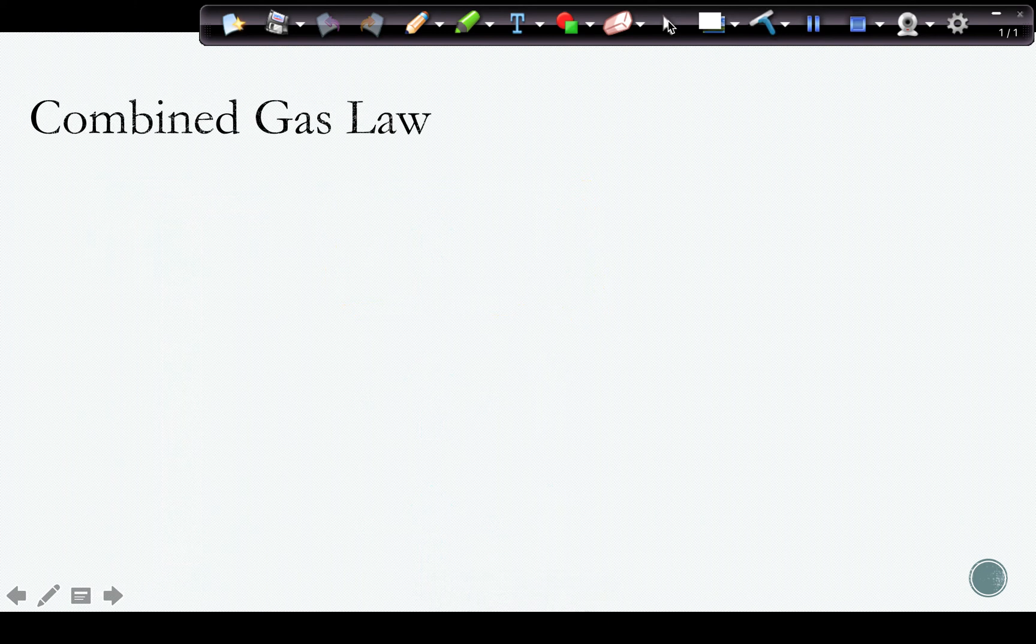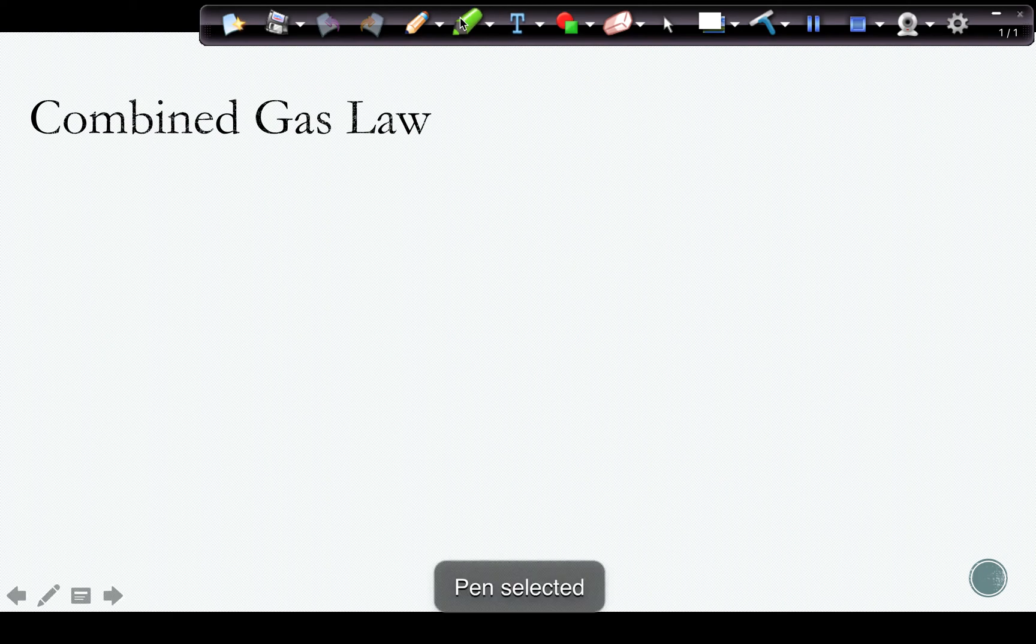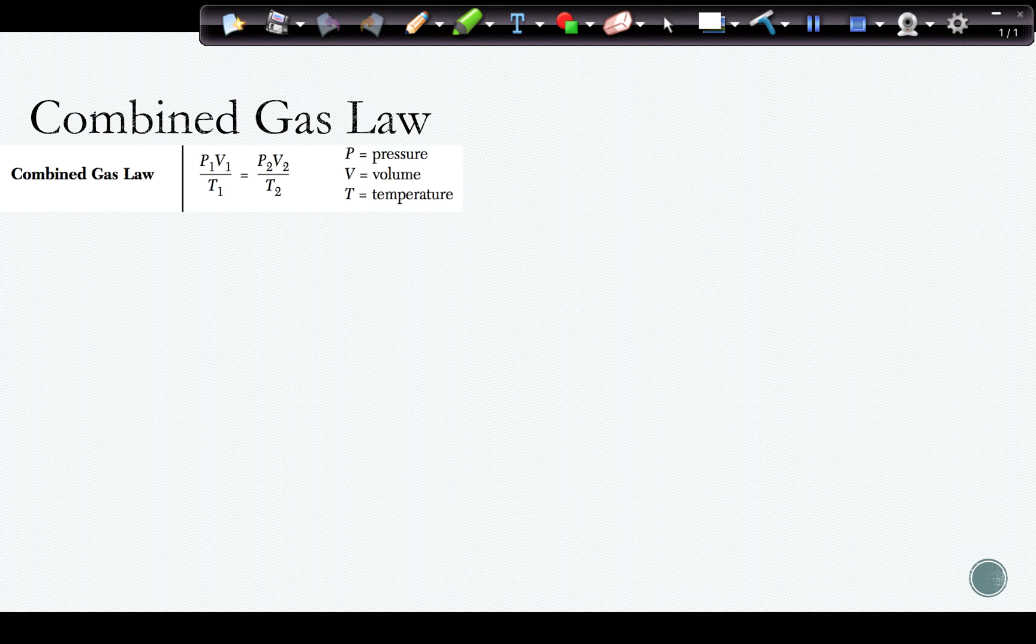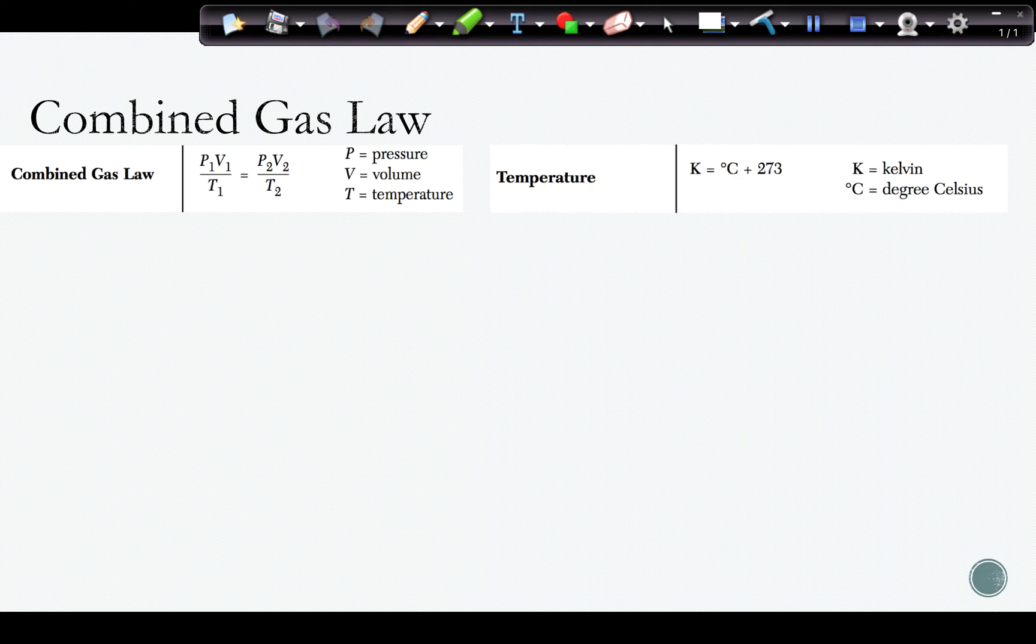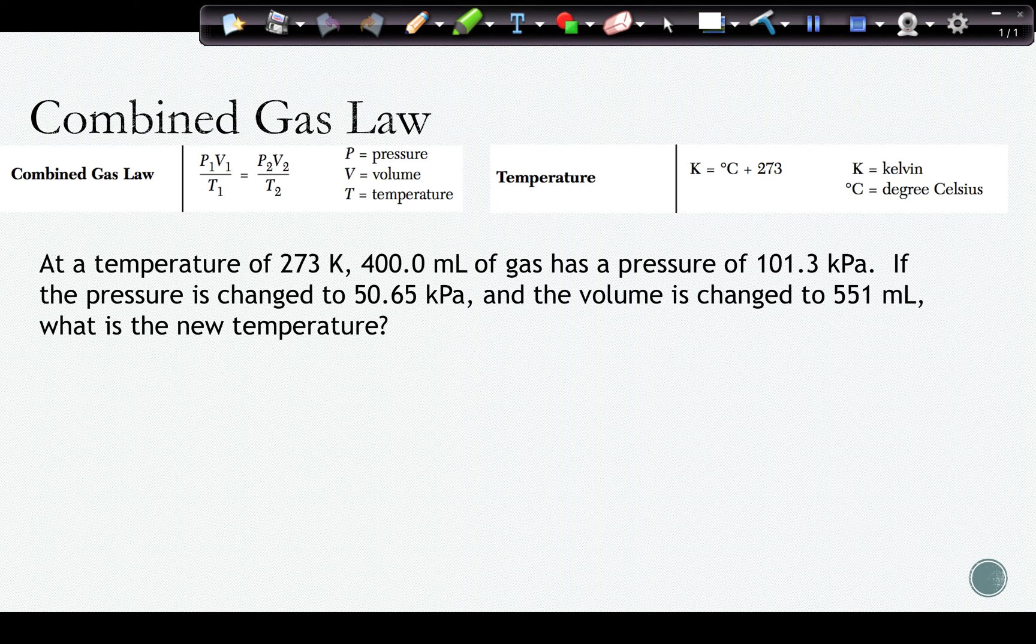We also have our combined gas law that we're going to use to talk about the relationships mathematically. For us, this is on table T and it's P1V1 over T1 equals P2V2 over T2. For this particular formula, we must use Kelvin temperatures. This is relating the pressure in any unit to the volume in any unit to Kelvin temperature only. Remember if your temperatures are not in Kelvins, we have the other formula on table T to help us convert from Celsius to Kelvin, which would mean adding 273 to the Celsius temperature.